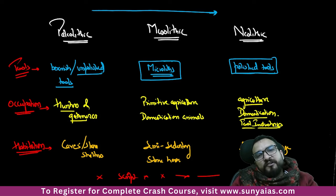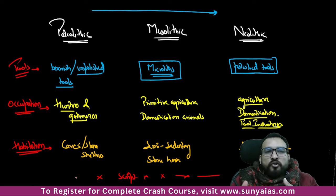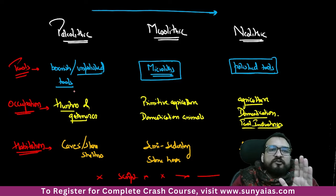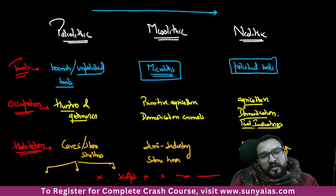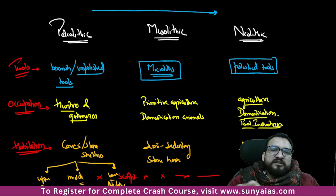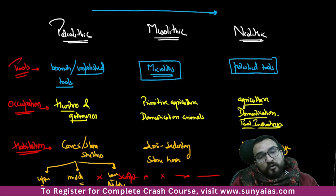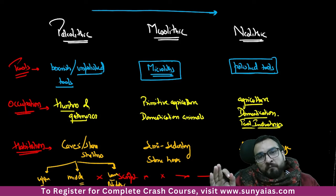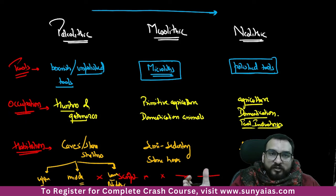Simultaneously, humans as a species were evolving. Fire was identified in Paleolithic times. In textbooks, the Paleolithic period is also divided into three sub-periods: Upper, Middle, and Lower Paleolithic — based on the changing shape of unpolished tools. There were tools like scrapers and burins, but no need to go into those details. Focus on exam-oriented material — questions will never come from these sub-divisions.